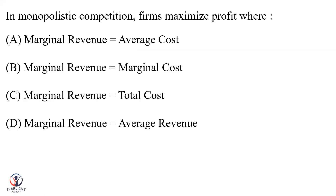In monopolistic competition, a firm maximizes profit. The market structures — perfect competition, oligopoly, monopoly, monopolistic competition, duopoly — in all of them, the firm must satisfy two conditions: condition one, MC is equal to MR; and MC should cut MR from below.